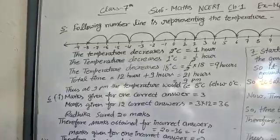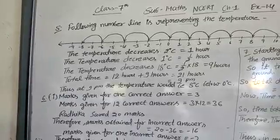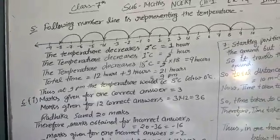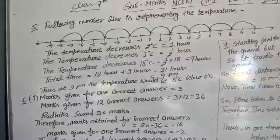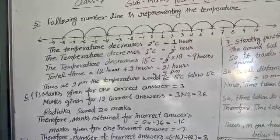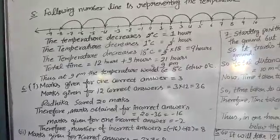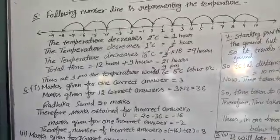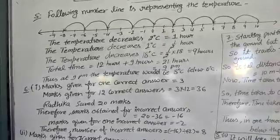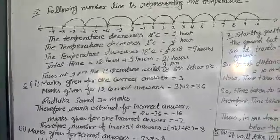Question number 5: The temperature at 12 noon was 10 degrees Celsius above 0. If it decreased at the rate of 2 degrees Celsius per hour until midnight, at what time would the temperature be 8 degrees Celsius below 0? Second: what would be the temperature at midnight? The room temperature at 12 noon is 10 degrees Celsius above 0.